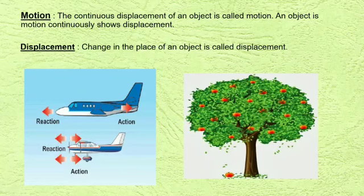An object in motion continuously shows displacement. So, what is displacement? Change in the place of an object is called displacement. For example, while waiting for a bus at a bus stop, other vehicles appear to be in a state of motion. On the other hand, when you are in motion yourself, a still object appears to be moving. For example, the trees are seen to run backward while you are traveling in a train. If an object is seen by an observer to change its place continuously, the object is said to be in motion.